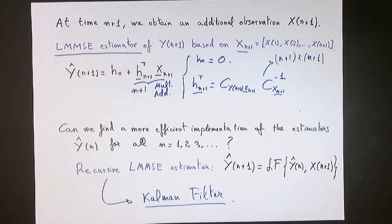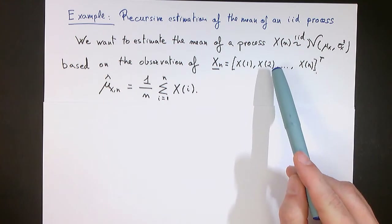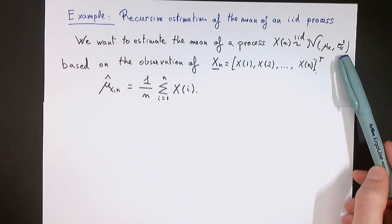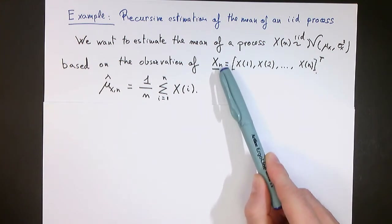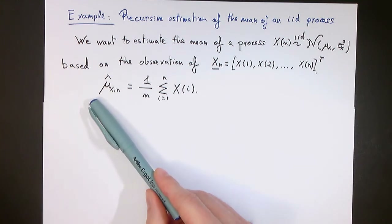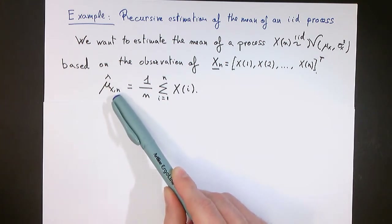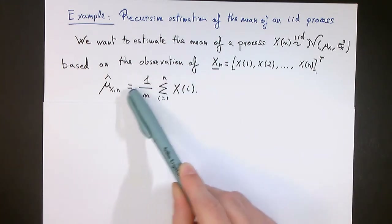But before we examine how the Kalman filter implements this recursive estimation, we will see a much simpler example of a recursive estimator: the recursive estimation of the mean of an IID process. Imagine that we have a process x of n, which is an IID Gaussian process with mean mu_x and variance sigma_x squared. We would like to estimate the mean of this process based on n observed samples from time 1 to time n. One possible estimate is the sample mean estimator, mu-hat_x of n, which is simply the average of the samples — we sum all samples from x of 1 to x of n and divide by n.